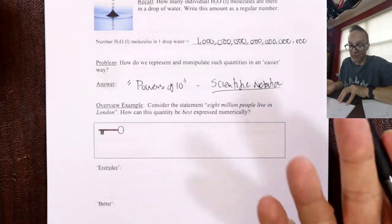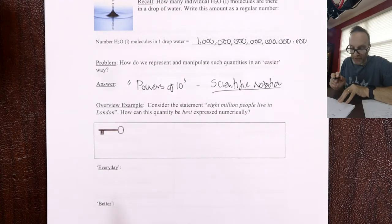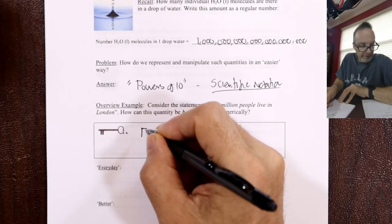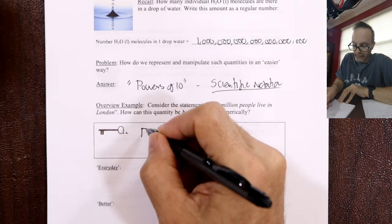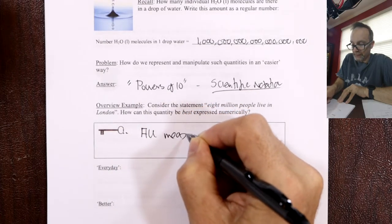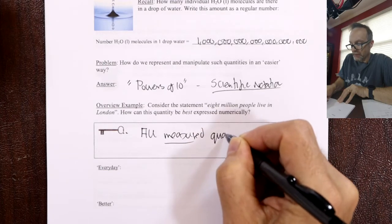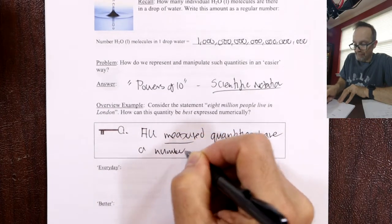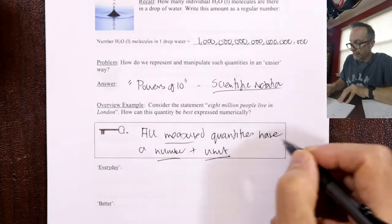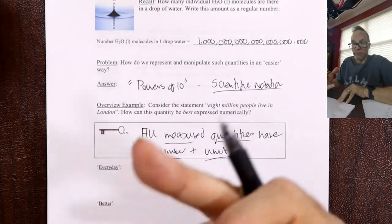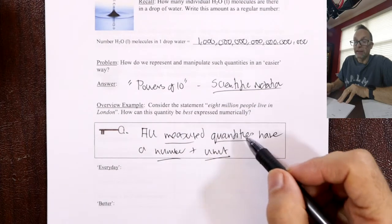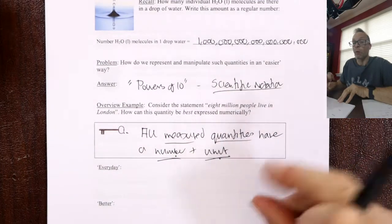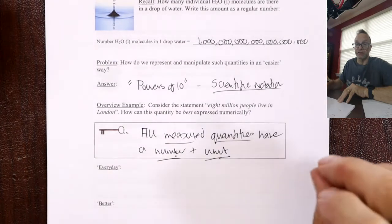We're going to turn 8 million into a more convenient expression. But before we do that, I want to reiterate a key point: all measured quantities have a number and a unit. Everything we do in science involves measurement. There's always a number in front and a unit in the back. I weigh 200 pounds — not 200. There's always a number and a unit that makes a quantity.